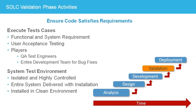QA testers will run several different types of test cases. The majority of test cases will ensure the software satisfies the functional and system requirements. Functional test cases demonstrate the features and behavior of the system. System requirements measure system aspects such as the application's performance, scalability, security, or reliability.